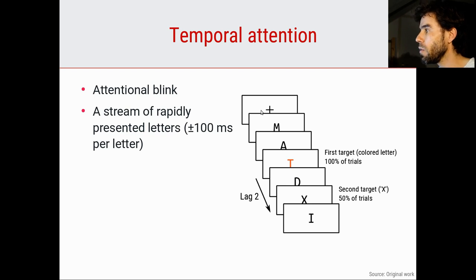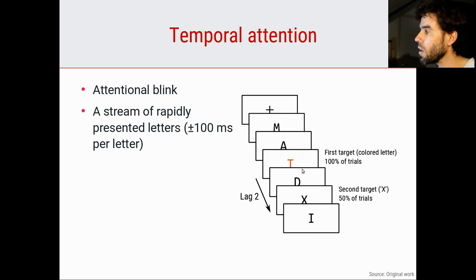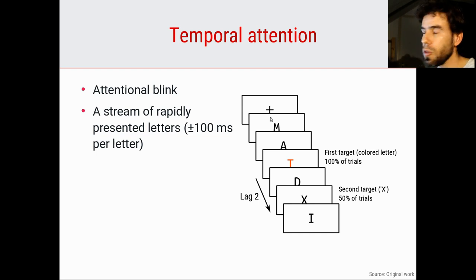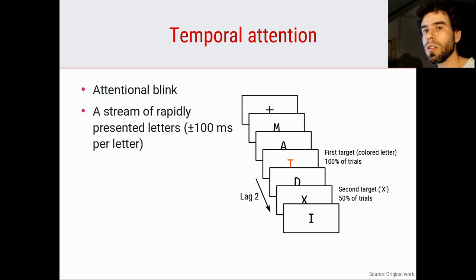Participants first see a cross in the center of the screen, and then a stream of letters: C, M, A, T, D, X, Y, I. There are two targets that the participant has to report. The first target is the colored letter, and the second target is an X, which is present on 50% of the trials. The participant sees all these letters flash by very rapidly, and then we ask: what was the colored letter? — in this case, T. And did you see an X or not? — in this case, yes. The T is the first target, or T1, and the X is the second target, or T2.